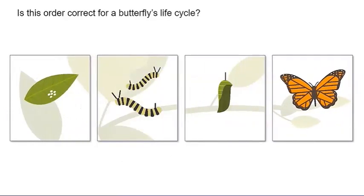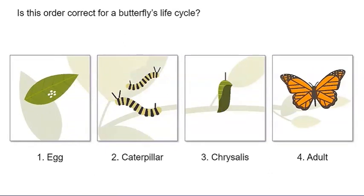Is this order correct for a butterfly's life cycle? Egg, caterpillar, chrysalis, adult. I think this is the correct order. Great work. I have a video clip that will help us know for sure. Let's watch it together.